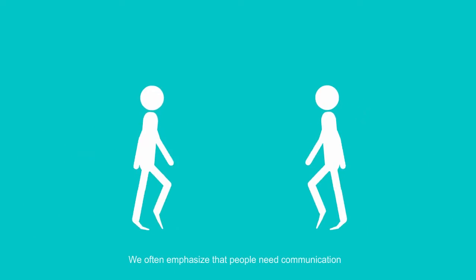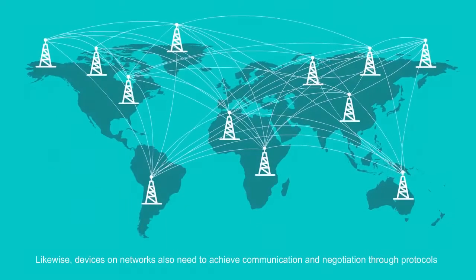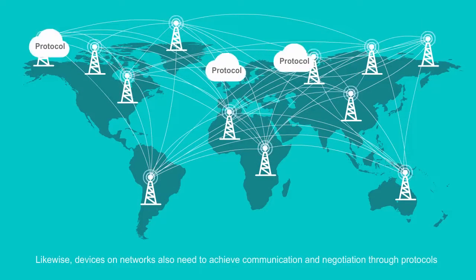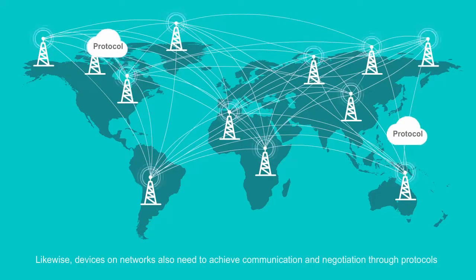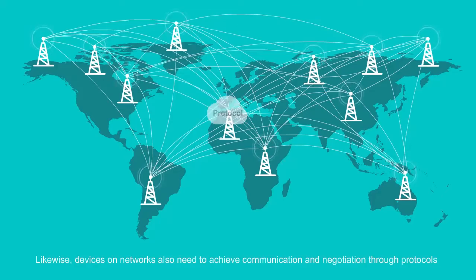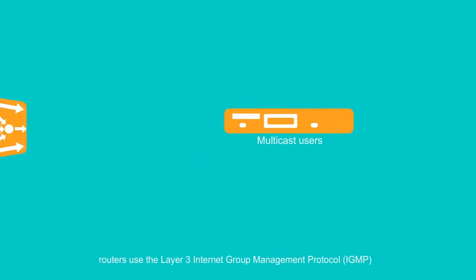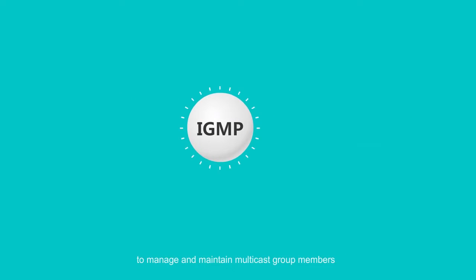We often emphasize that people need communication. Likewise, devices on networks also need to achieve communication and negotiation through protocols. In the case of multicast services, routers use the Layer 3 IGMP to manage and maintain multicast group members.